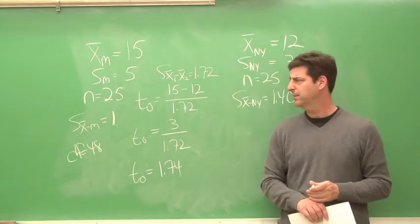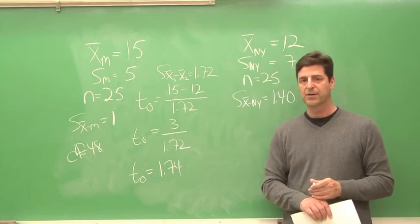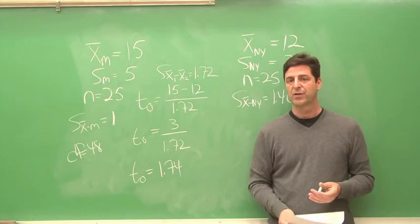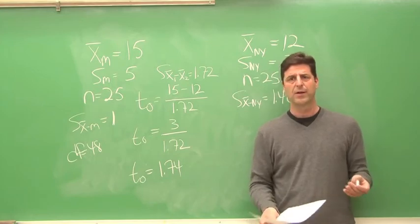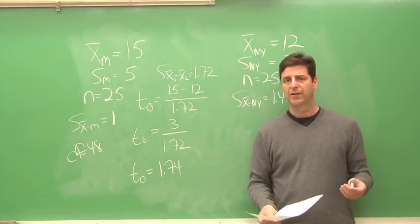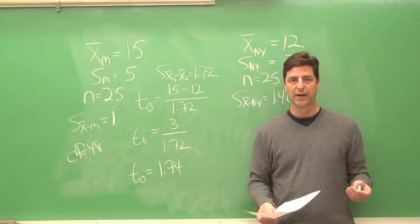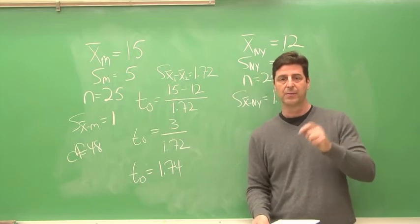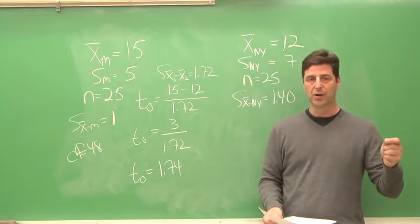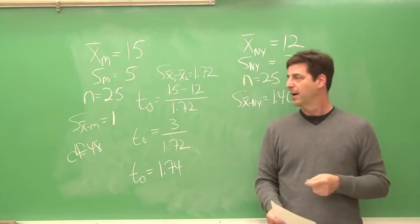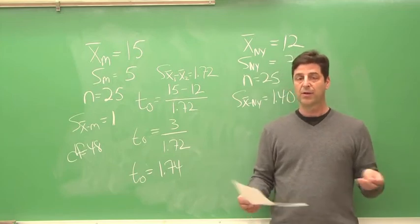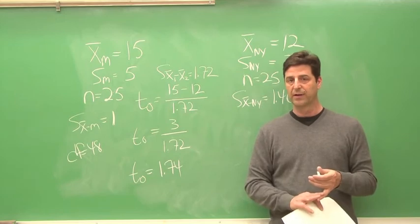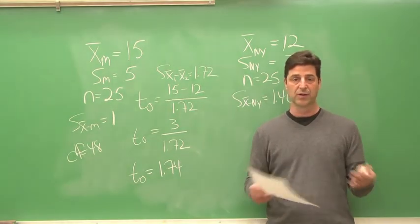Now we need to decide whether we're doing a one-tail test or a two-tail test. This depends on the research question. If the research question is, I wonder whether Michigan lakes have higher water quality than New York lakes, that's a one-tail question because it's only speculating that Michigan will be higher than New York, not that it will be lower. On the other hand, if our research question is, I wonder whether there's a difference in the water quality of Michigan lakes and New York lakes, that's a two-tail question. The difference could go either direction.